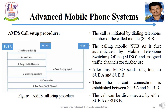This is the call setup procedure. The call is initiated by dialing the telephone number of the called mobile. The calling mobile is first authenticated by the MTSO and assigned traffic channels for further use. After this, the MTSO sends a ringtone when the circuit connection is established between the called mobile and the calling mobile. The call can be disconnected by either the called mobile or the calling mobile.